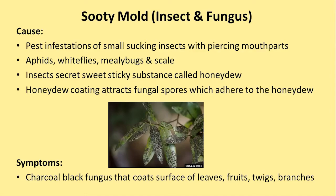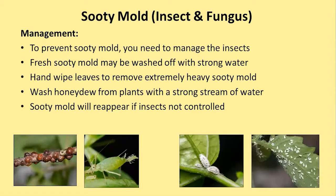The symptom of sooty mold is the black fungal coating you see on the leaves, twigs, and branches. To prevent it, you have to manage the insects—the sooty mold is not the problem, the insects are. Fresh sooty mold can often be washed off with a strong stream of water, or on stiff-leaved plants like camellias, you can wipe it off with a rag. The sooty mold will reappear if you don't control the insects, so insect control is essential.